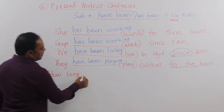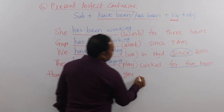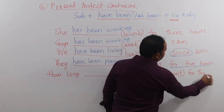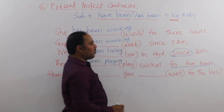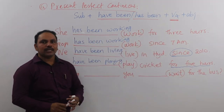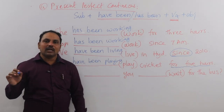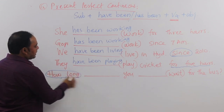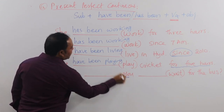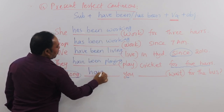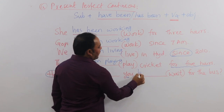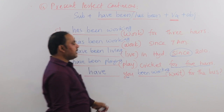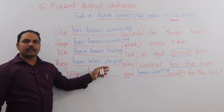Last example: 'How long dash you dash wait for the bus?' This asks how long someone has been waiting. 'How long' is a clue word for present perfect continuous, so we use 'have been'. The answer is: 'How long have you been waiting for the bus?'